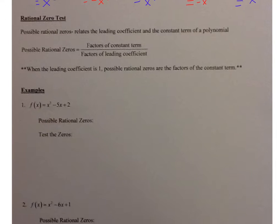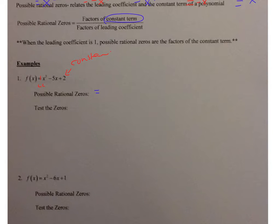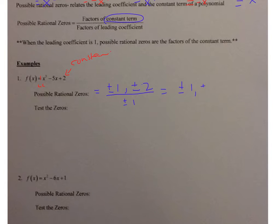Take a look at number 1: f of x equals x cubed minus 5x plus 2. The 2 is your constant and there's a 1 in front, so that's your leading coefficient. My factors of 2 are 1 and 2, so possible zeros are plus or minus 1 and plus or minus 2. Divided by the factors of 1, which is just plus or minus 1, this gives plus or minus 1 and plus or minus 2.